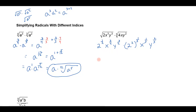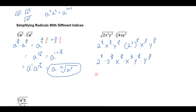Let's combine our bases. I'll leave it as 2 to the one-half times 2 to the two-thirds, then x to the three-halves times x to the one-third, and y to the three-halves times y to the two-thirds. So I'm going to add my exponents: 2 to the one-half plus two-thirds, x to the three-halves plus one-third, and y to the three-halves plus two-thirds.